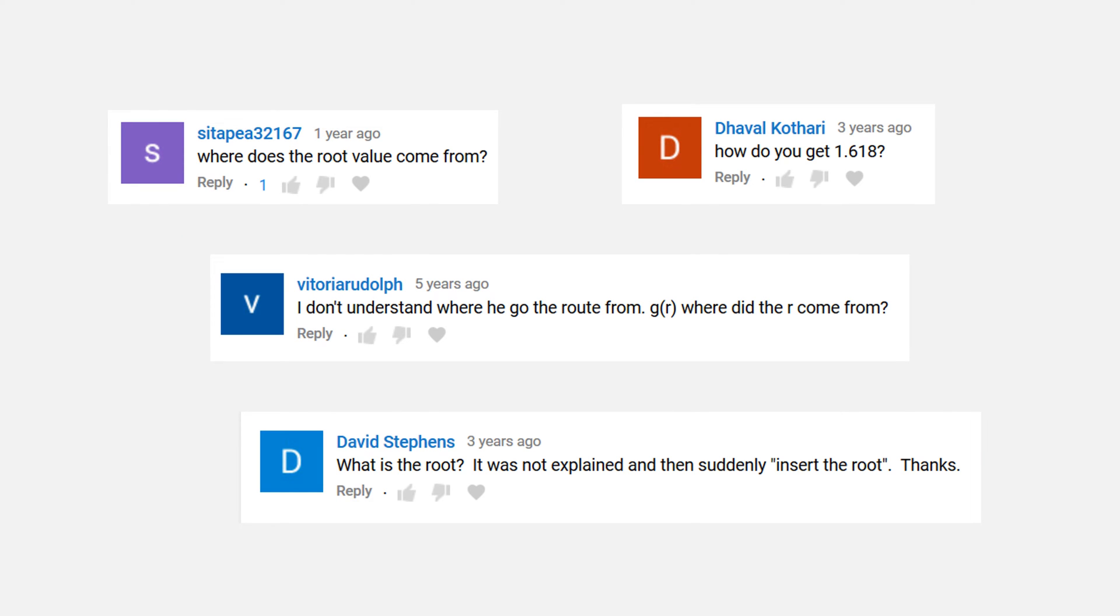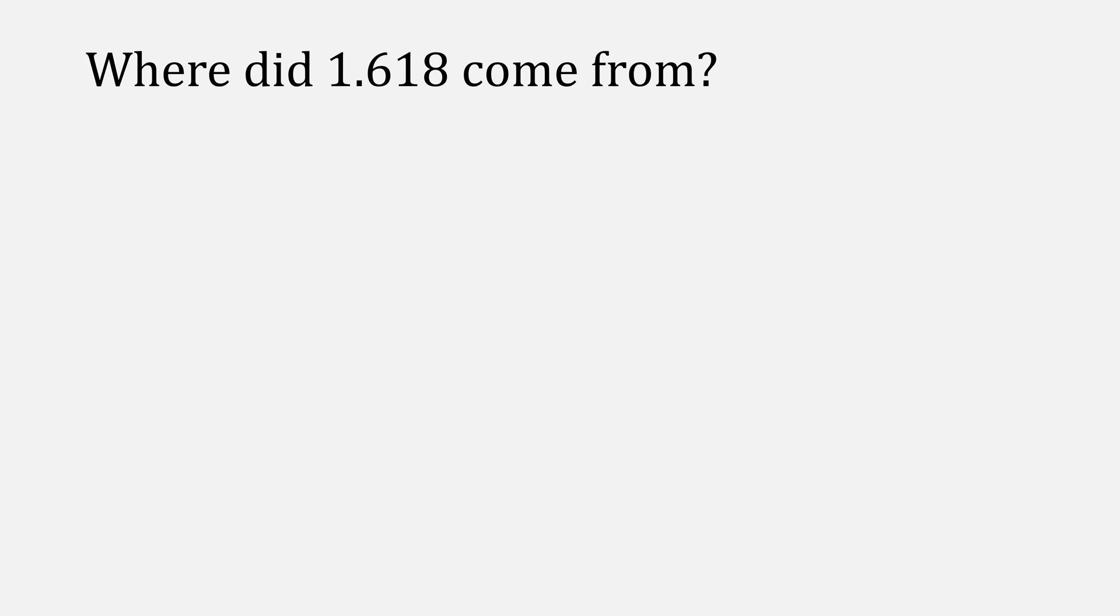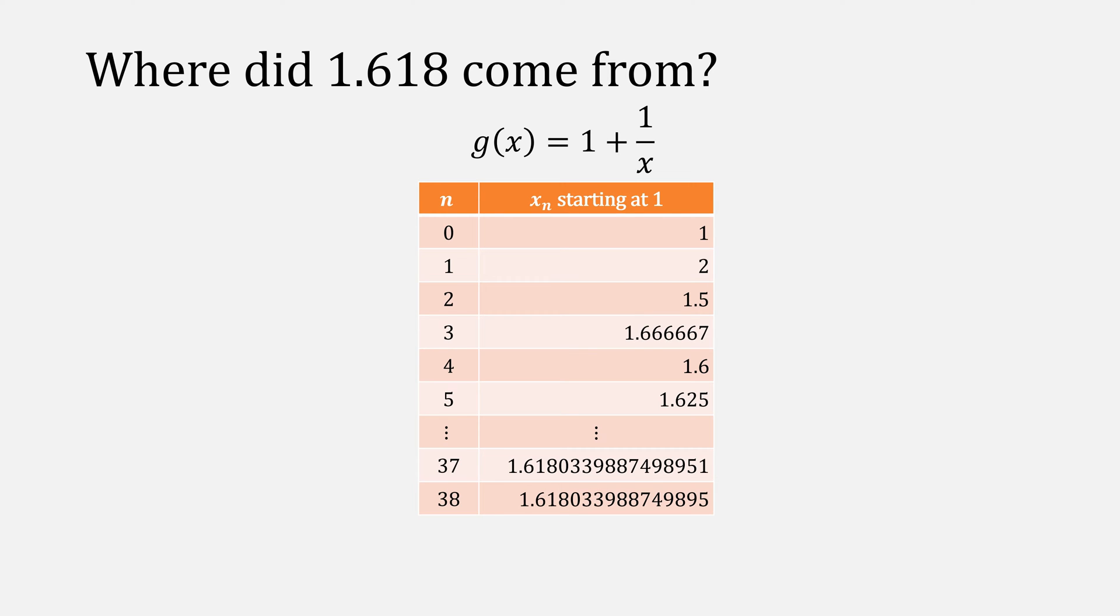Here's another common question, which is, how do we come up with 1.618? If we take our function g of x equals 1 plus 1 over x and iterate, after about 38 iterations, this becomes the value of phi, or 1 plus the square root of 5 over 2, which is approximately the value of 1.618. This will be related to further questions too.